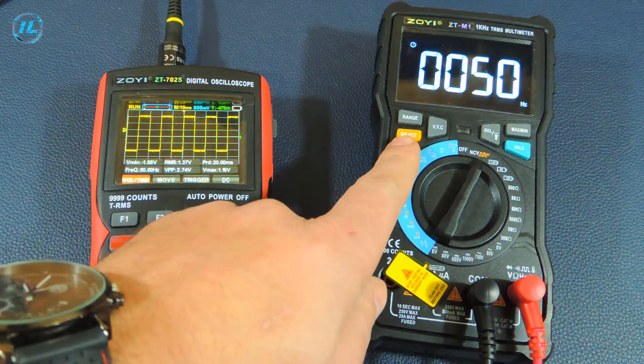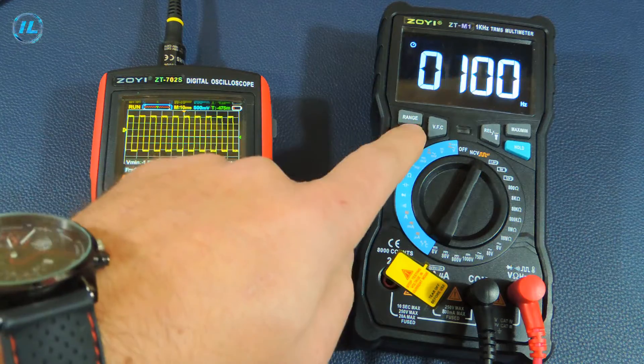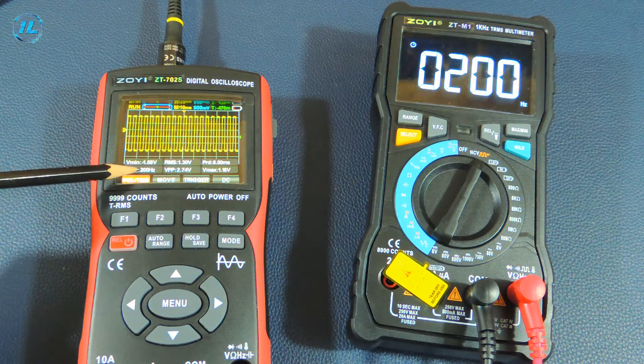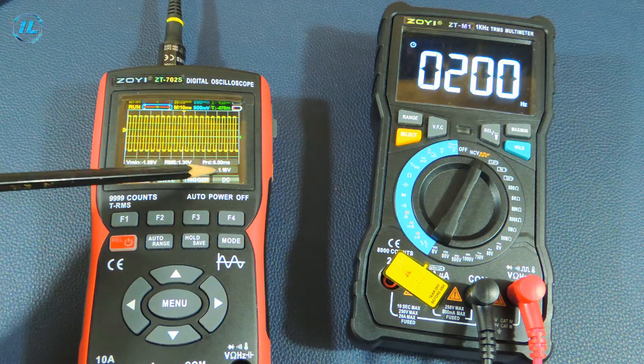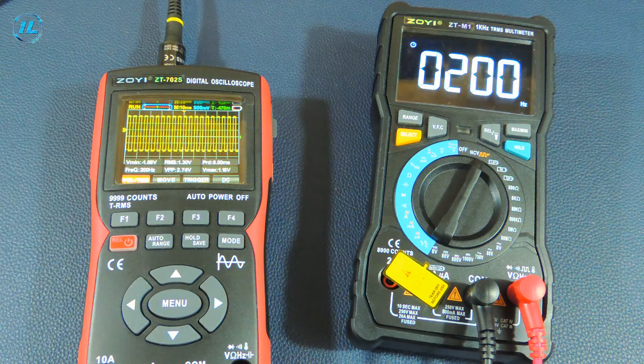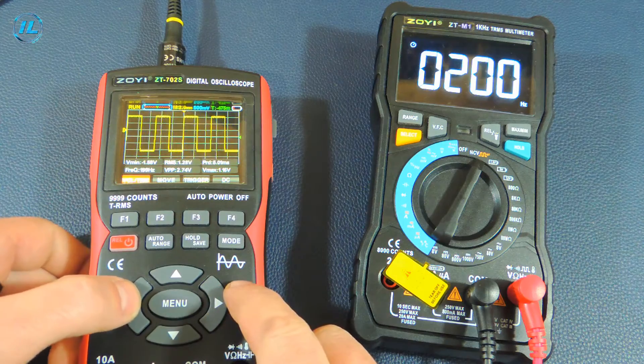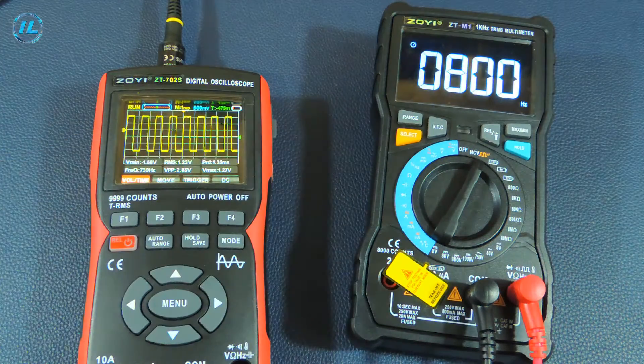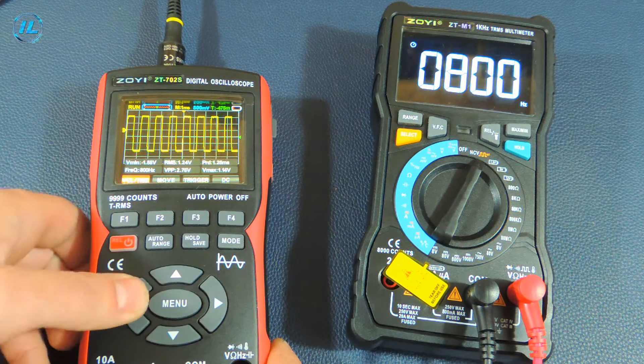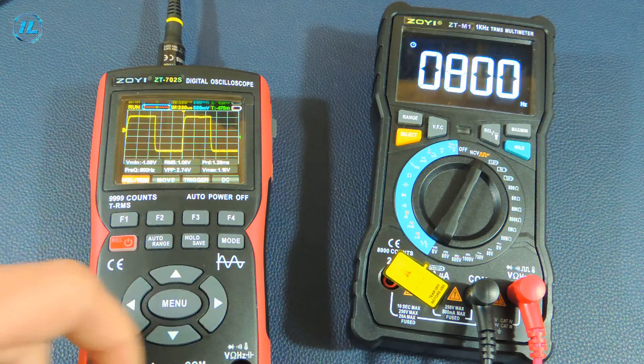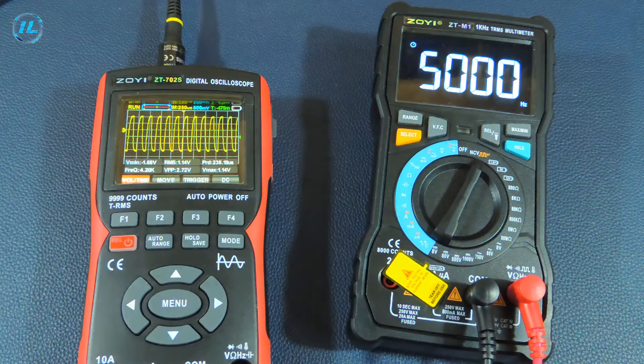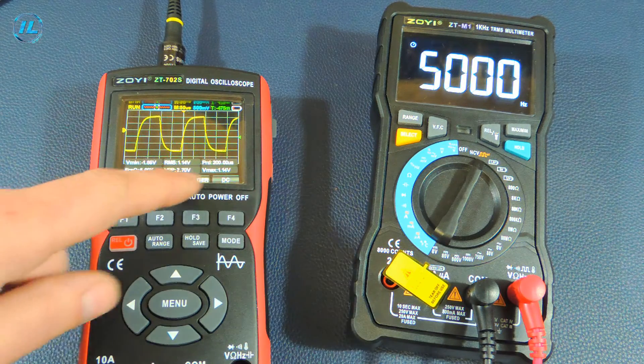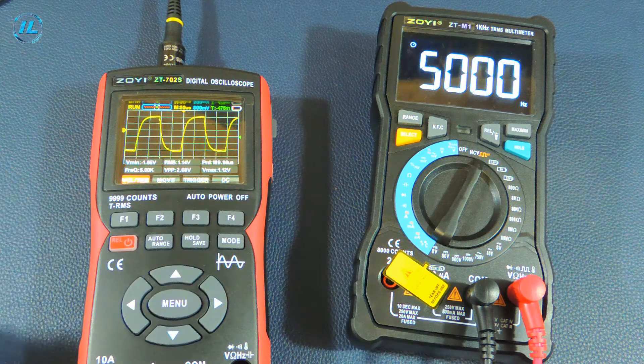Using the select button, you can change the frequency. 200 hertz. The oscilloscope has exactly the same indicators: 200 hertz, voltage is 1.16 volts. 800 hertz. The oscilloscope also has 800 hertz. 5 kilohertz. The frequency is 5 kilohertz. The voltage is 1.14 volts.